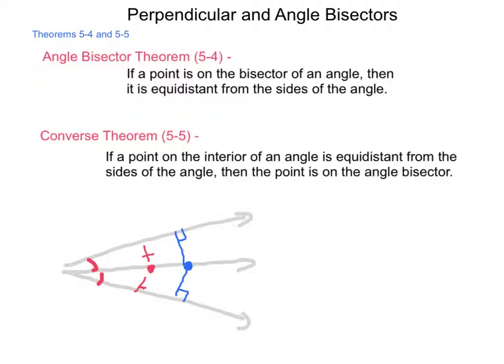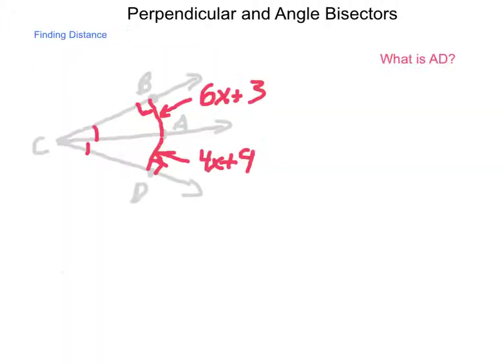So, we can use these concepts and ideas in order to find other parts of triangles as well. Let's take a look. In the diagram, we can see that ray CA is the angle bisector based on the markings of congruence for angles BCA and ACD. That means that point A is equidistant from ray CB and ray CD. We need to find the length of segment AD.